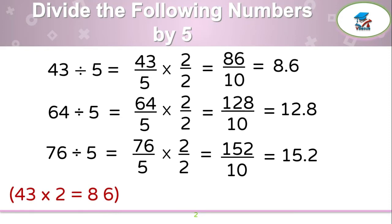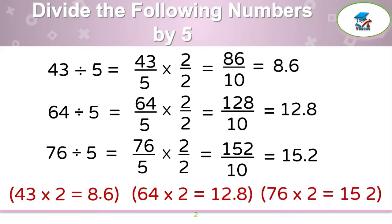This can be simplified like this also. Just multiply 43 times 2, that is 86, and move the decimal 1 digit left — your final answer is 8.6. Same: 64 multiplied by 2 is 128; move the decimal 1 digit left and your answer is 12.8. Next, 76 times 2 is 152; move the decimal point 1 digit left and your answer is 15.2.